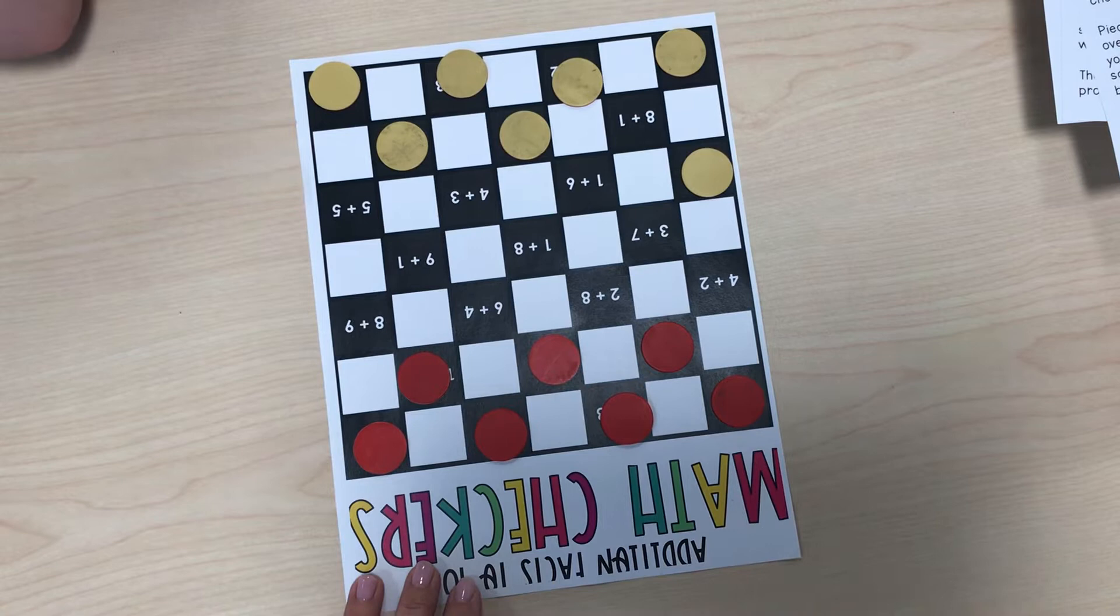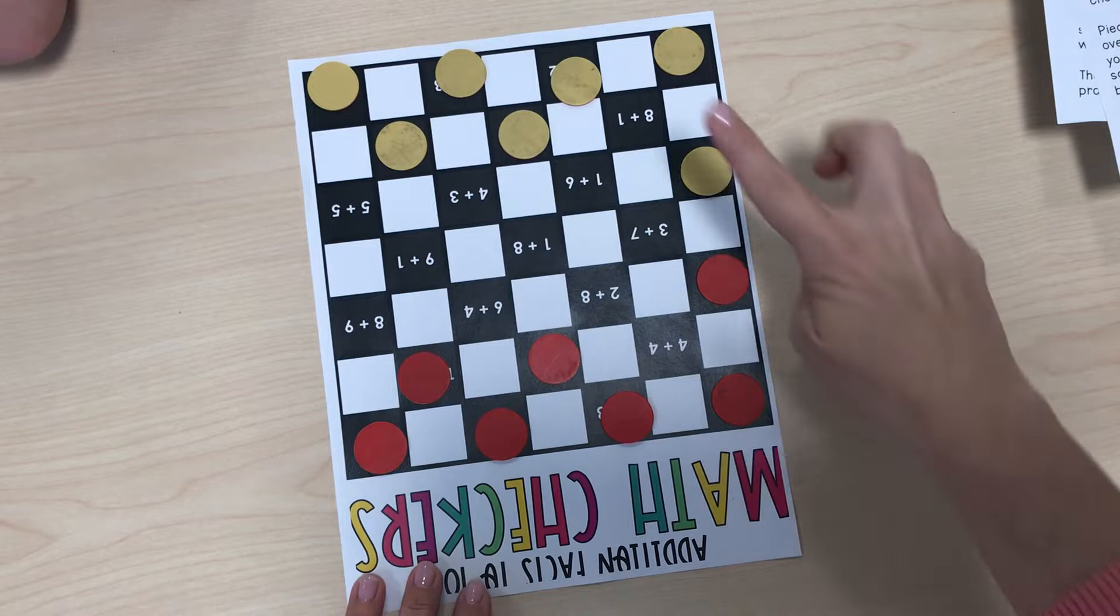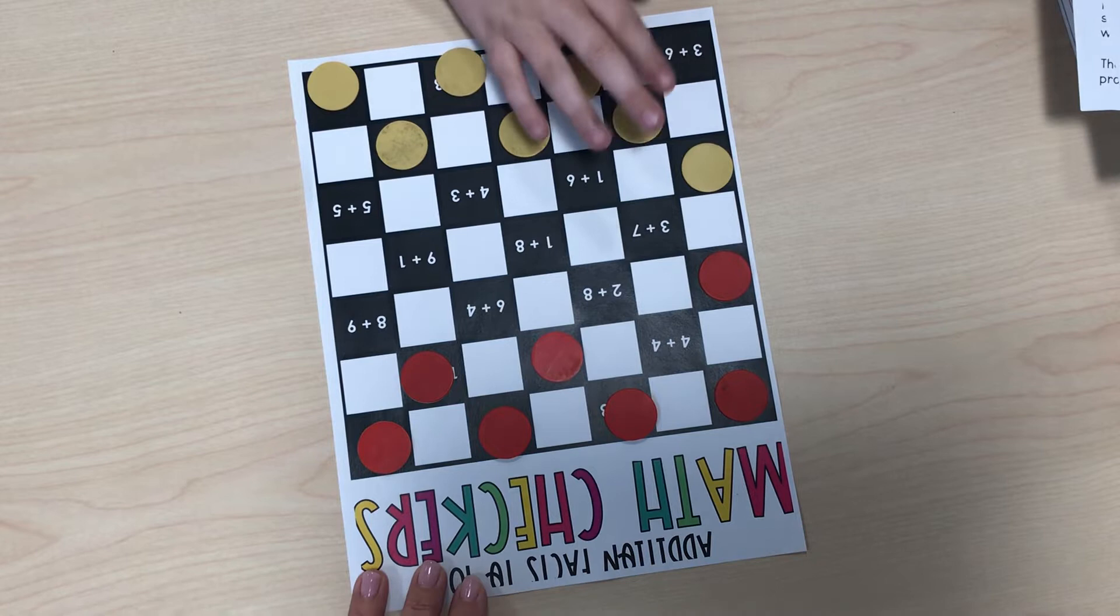Okay, I think I'm going to do 2 plus 4 is 8. We move diagonally. Okay Jack, which way are you going to go next? I'm going to make a line. So 1 plus 8 is 9.